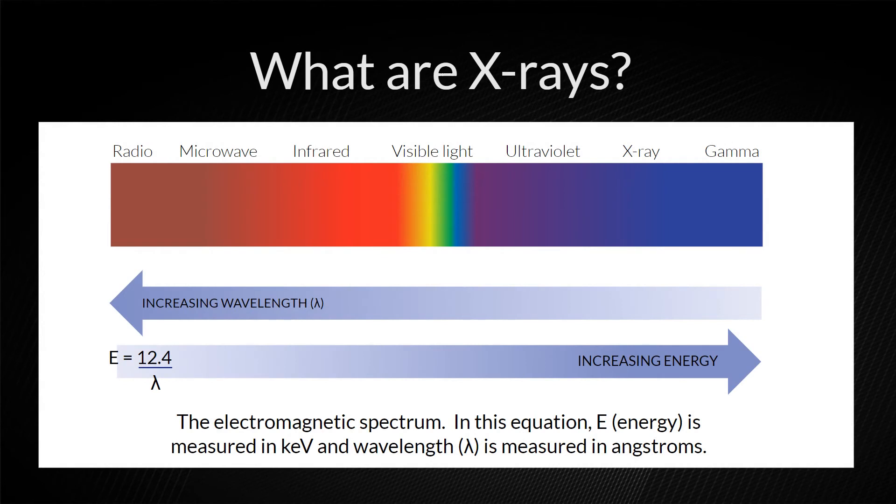X-rays are high-energy electromagnetic waves with a length comparable to the distance between atoms and solids, about 1 angstrom or 10 to the negative 10 meters. They are produced by the collision of fast-moving electrons with the target material.